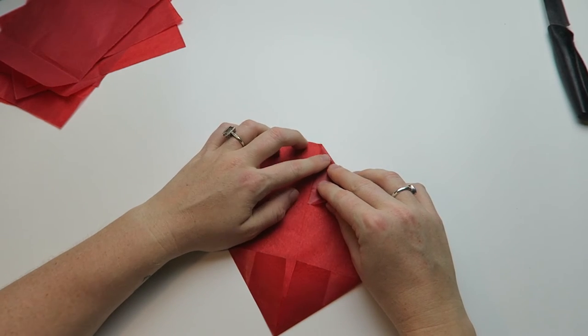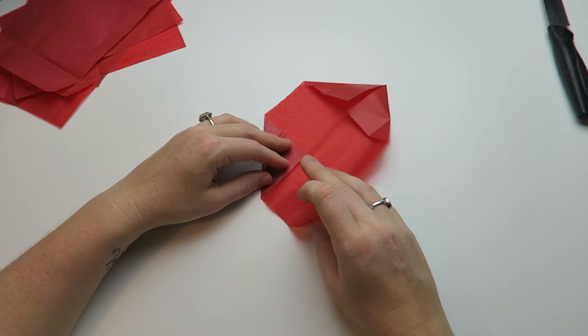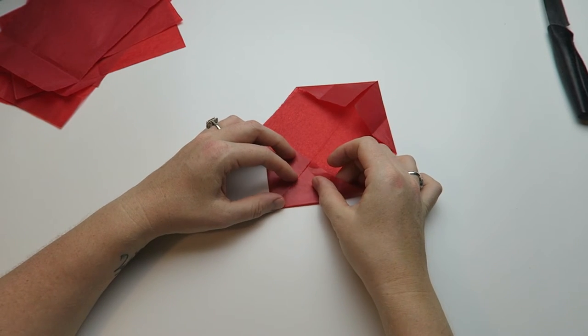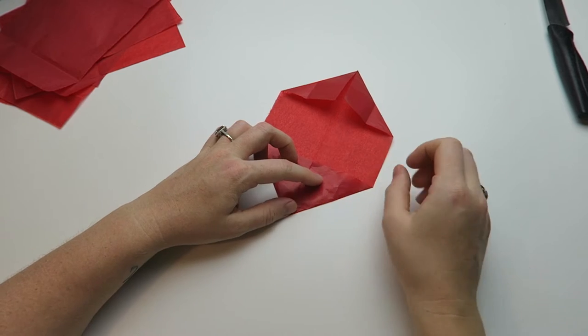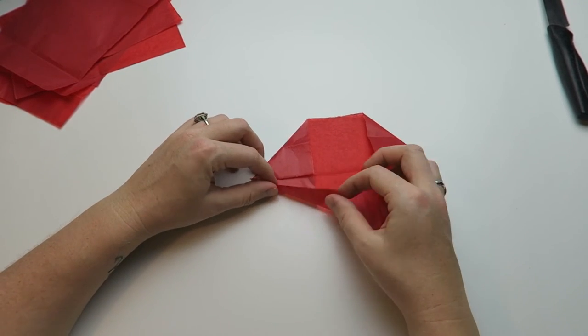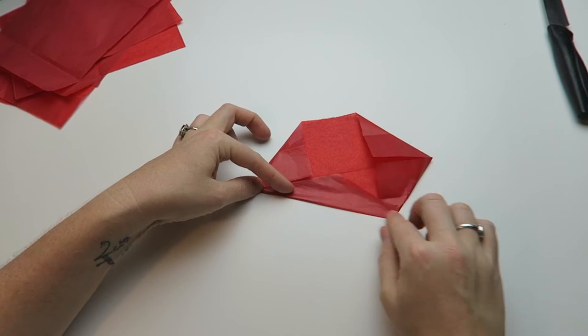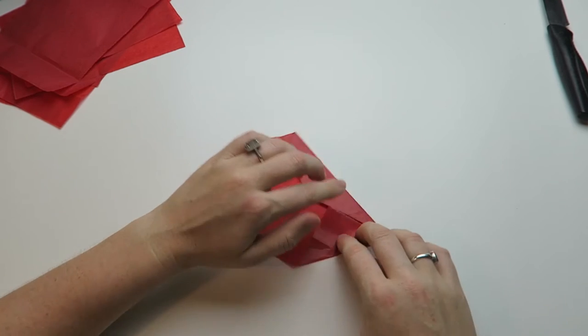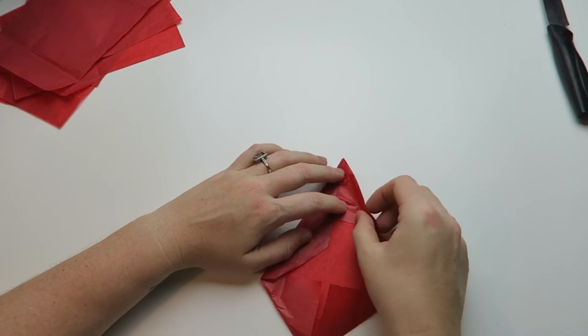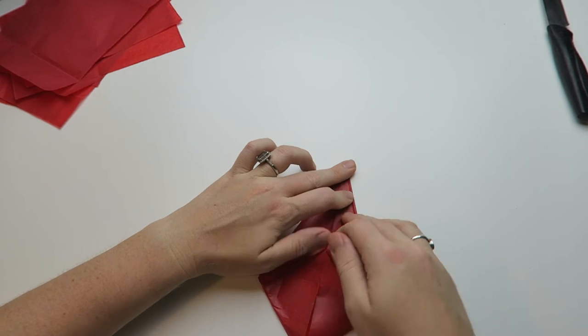So all the outer corners are going towards the middle now. Once we are finished with that, we're going to fold down one end once more down to the middle and the other side as well. We're going to leave the other end as it is.